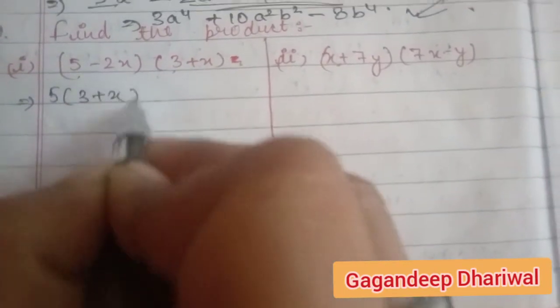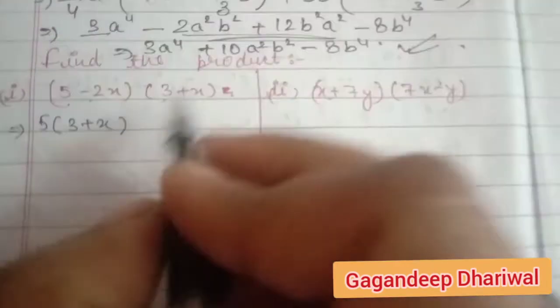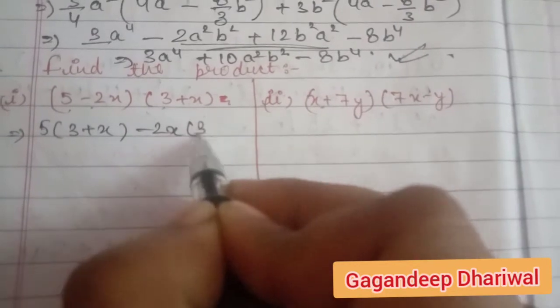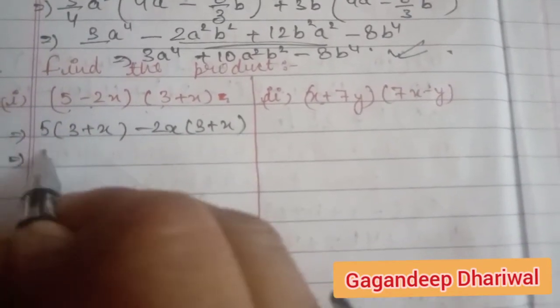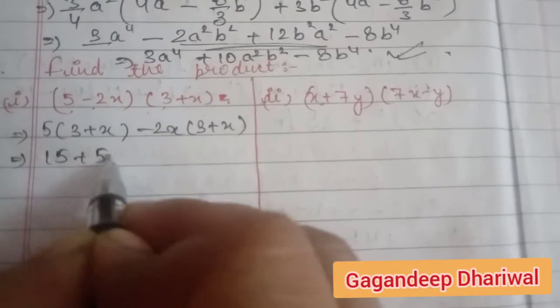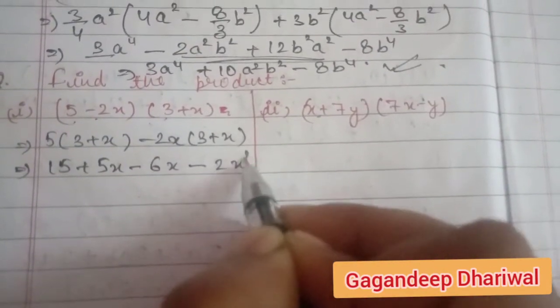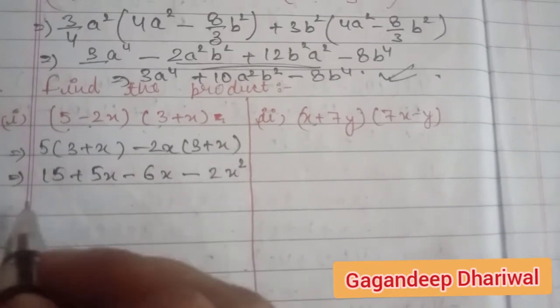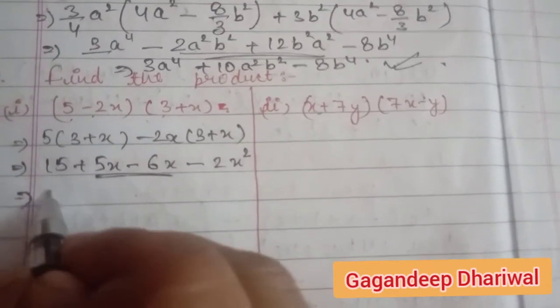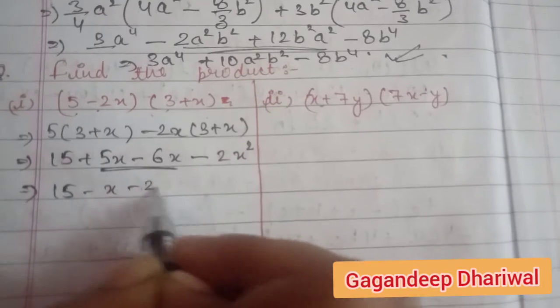So it becomes 5 times (3 plus x) minus 2x times (3 plus x). Multiply term by term: 15 plus 5x minus 6x minus 2x squared. See, the two middle terms are like terms to each other, so 15 minus x minus 2x squared is your answer.